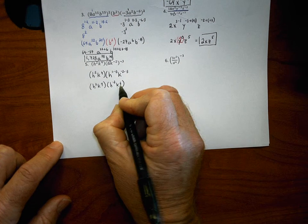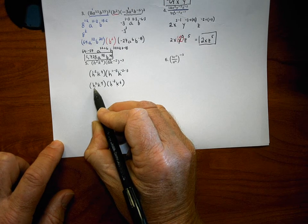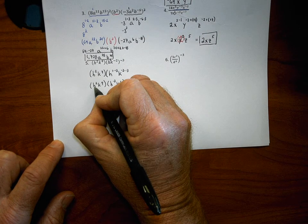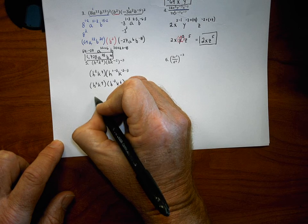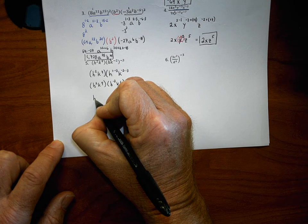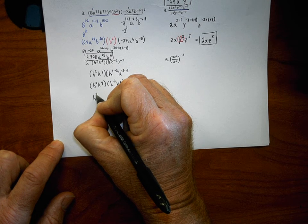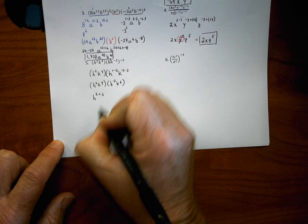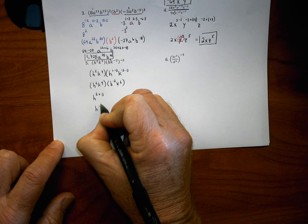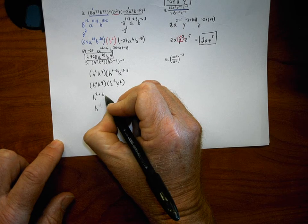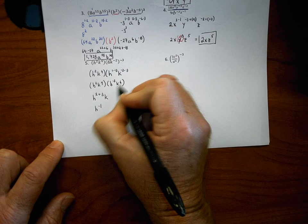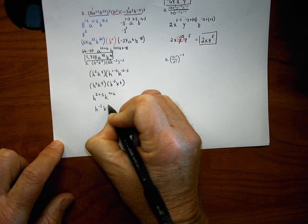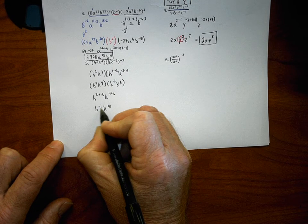For k: inside exponent negative two times outside exponent negative three gives k to the positive sixth. Now my problem is h squared k to the fourth multiplied by h to the negative third k to the sixth. Using the product rule, I add the exponents: for h, two plus negative three gives h to the negative first; for k, four plus six gives k to the tenth.